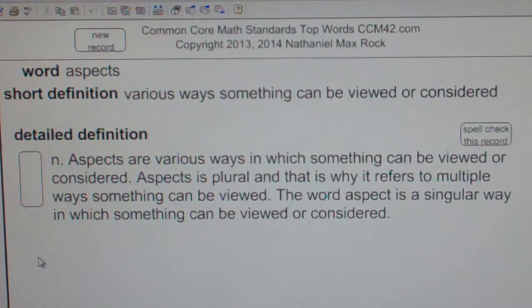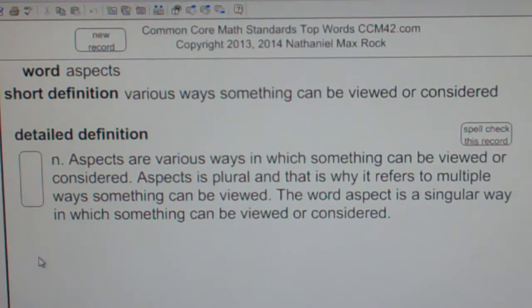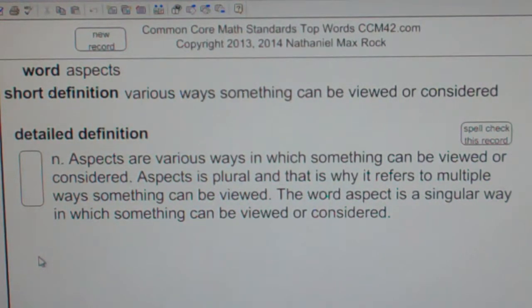Aspects. Various ways something can be viewed or considered. Noun. Aspects are various ways in which something can be viewed or considered.